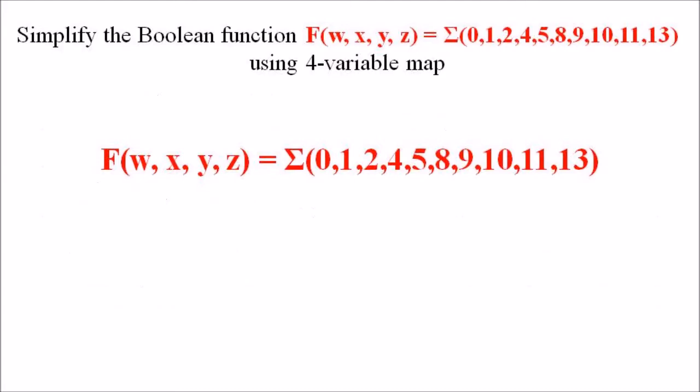In this lecture we are considering our second example. The question is: simplify the Boolean function f(w, x, y, z) = Σ(0, 1, 2, 4, 5, 8, 9, 10, 11, 13) using a four-variable Kmap solution.